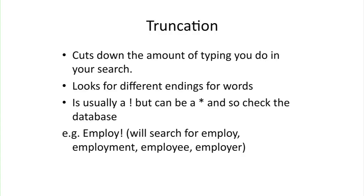Another useful way of making your search more effective is to use truncation. This cuts down the amount of typing you do in your search. By using truncation, the database will actually look for different endings for words. For most databases, you'll find it's an exclamation mark, but it can be an asterisk, so do check the database. For example, if you're looking for legal research on employment, you might need documents that include the word employer, employee, employment, employees. If you just use employ! the database will find all those endings for you — it's a time saver and means you don't make typing mistakes in your search.